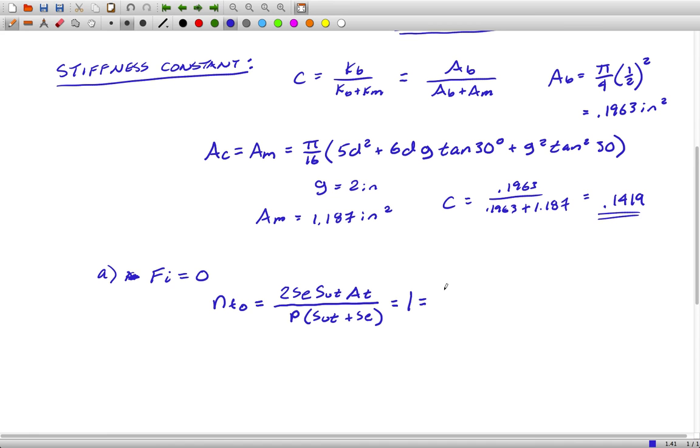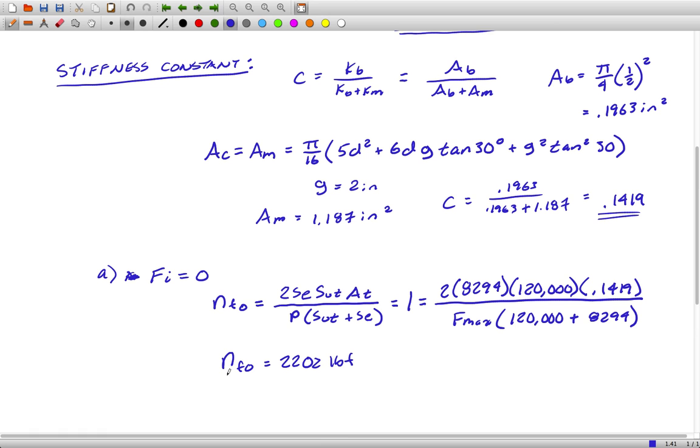So, what we're setting up here is if there's no initial tension, as a result of that, it's a little bit of a different formula. I'm going to use a factor of safety as one, once again, of our endurance limit, our ultimate strength, our tensile area, Fmax, which is what we're shooting for, and then SUT plus SE. Out of that, we get 22,002 pound force.